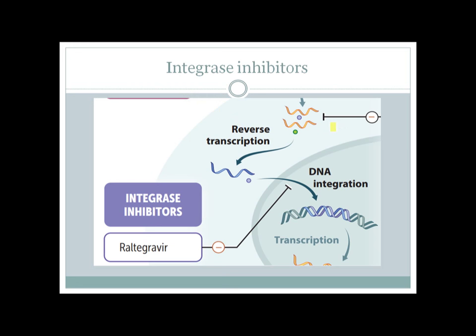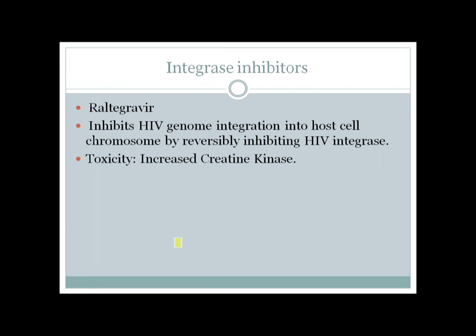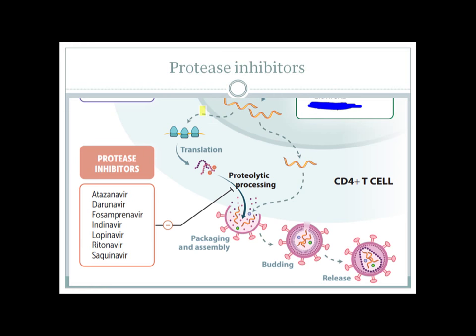The next group is integrase inhibitors. After the RNA is reverse transcribed into DNA, the enzyme integrase helps the HIV DNA integrate into the host genome. One important drug is raltegravir, which inhibits HIV genome integration into the host cell chromosome by reversibly inhibiting HIV integrase. The most important toxicity associated with raltegravir is increased creatine kinase.